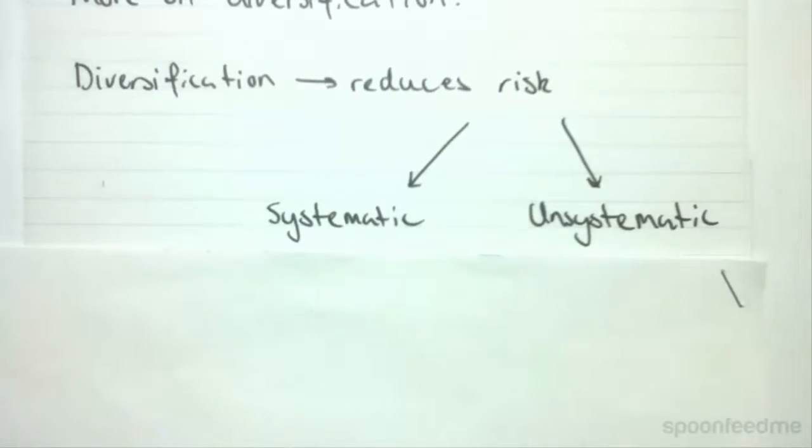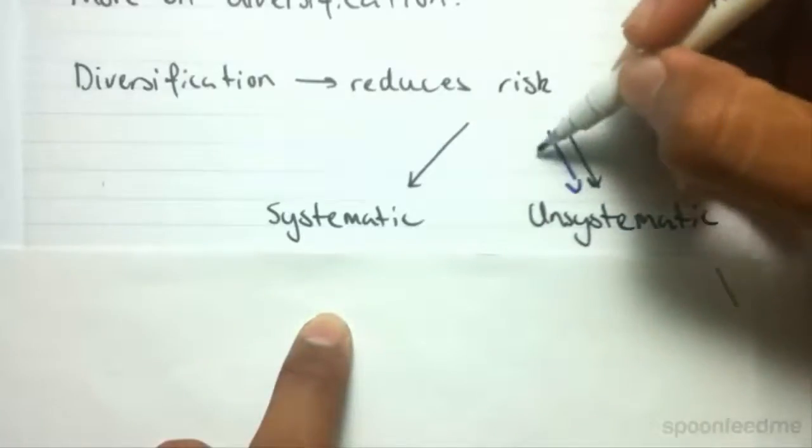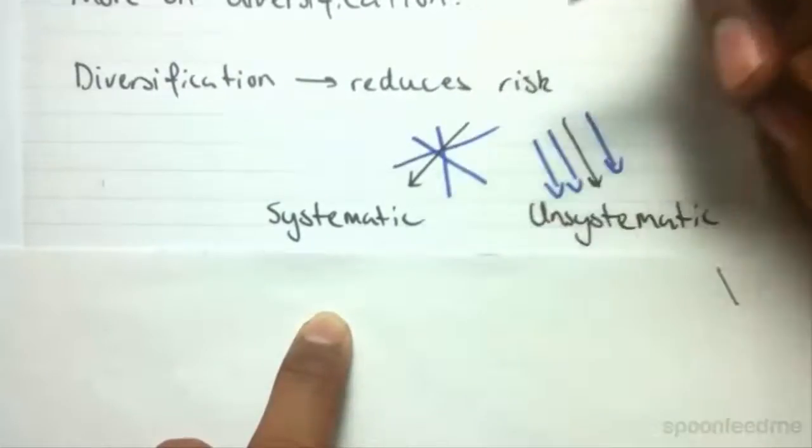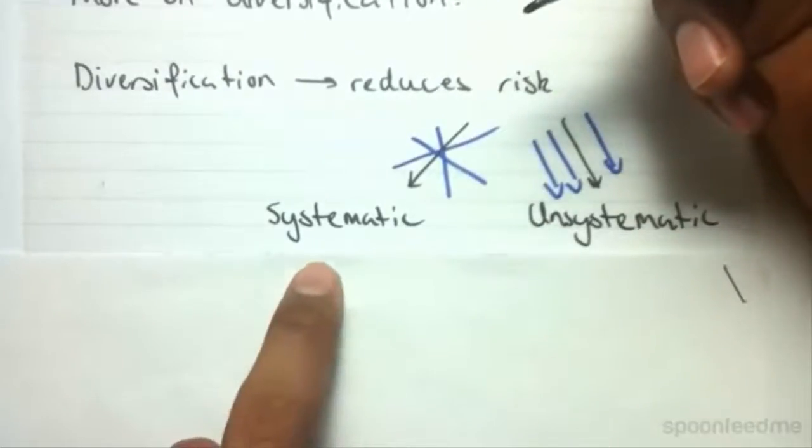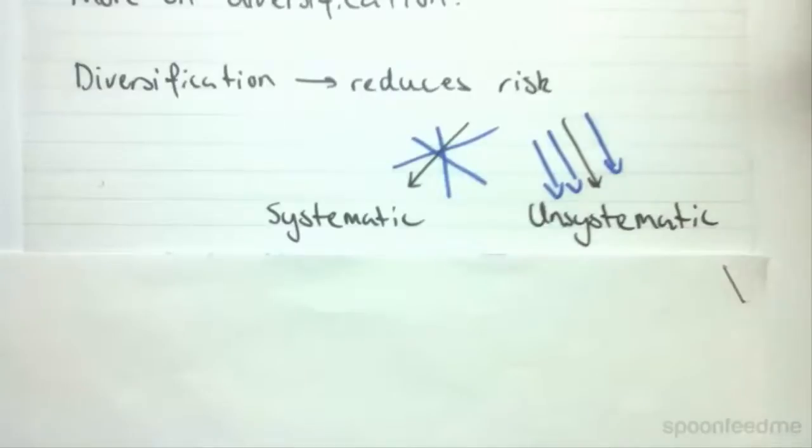We've covered this before. Now there is something to say here: diversification only reduces unsystematic risk. It does not reduce systematic risk. It only reduces unsystematic risk, does not reduce systematic risk.